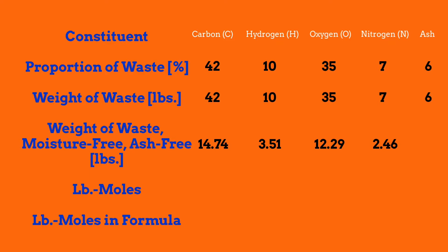Just in case you do not have a periodic table in front of you: the atomic mass of carbon is 12, hydrogen is 1, oxygen has an atomic mass of 16, and nitrogen is 14. After doing this calculation, you now have the number of moles in this 100-pound portion of waste.